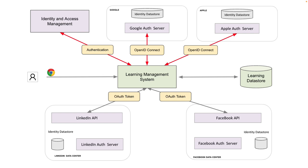In many cases, identity and access management can also act like a broker in the middle, consolidating all three different types of users into one data store. For the learning management system, they have three kinds of users: users registered specifically in its own identity and access management, Google users, and Apple users. The very first time they are asked to log in, they would be given three choices — a user ID and password with a login button, or buttons to log in via Google or Apple. Clicking those buttons would initiate an OpenID authorized request to the respective authorization servers.